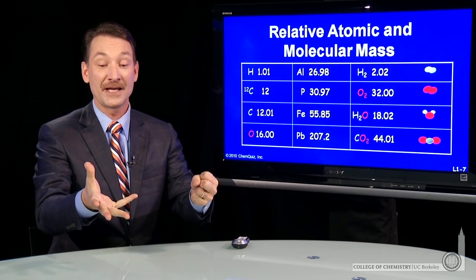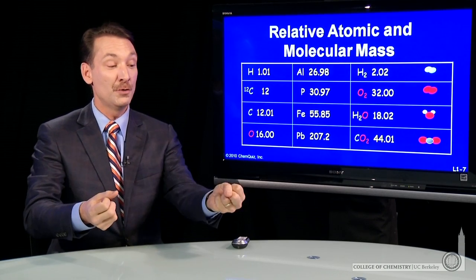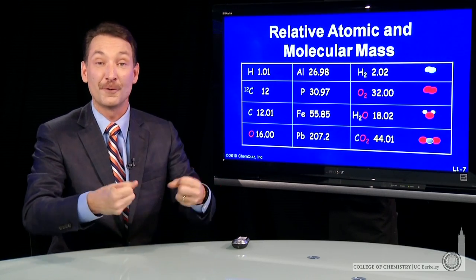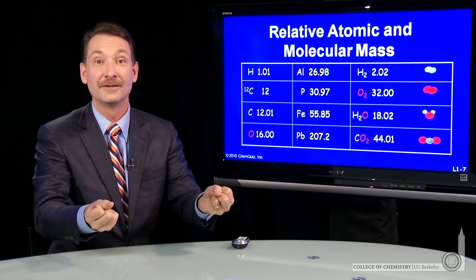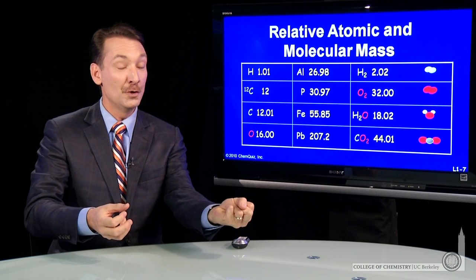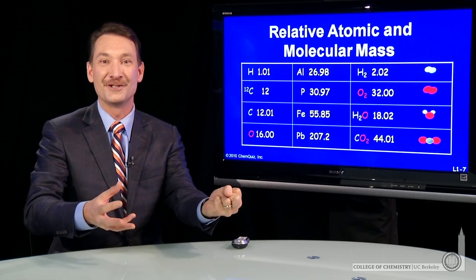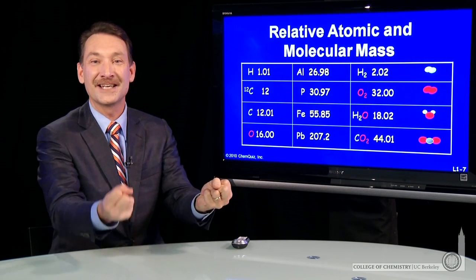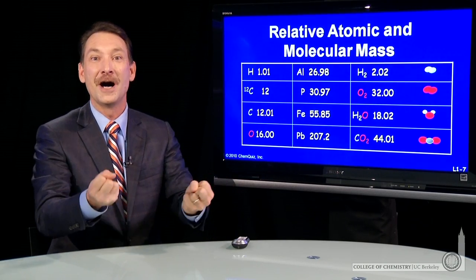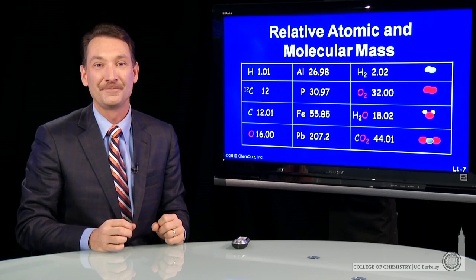What if I wanted to react them in a 2 to 1 ratio — two hydrogens for every oxygen — to form water? Then I'd have to have 2 grams of hydrogen for every 16 grams of oxygen, a 2 to 1 relative mass ratio.